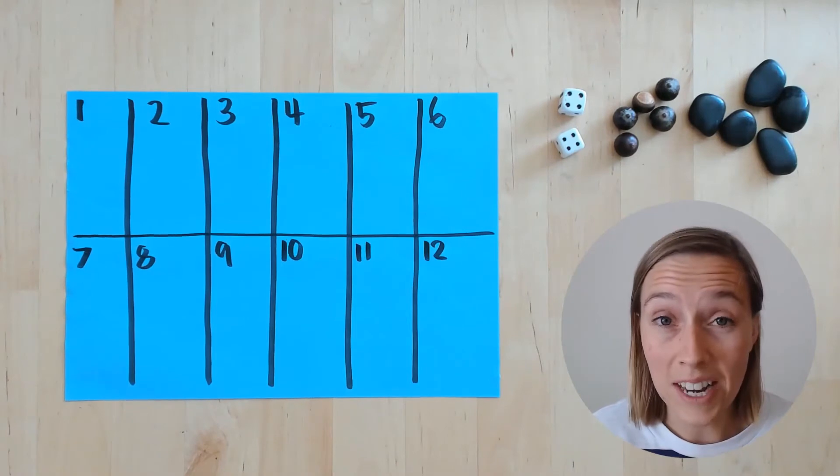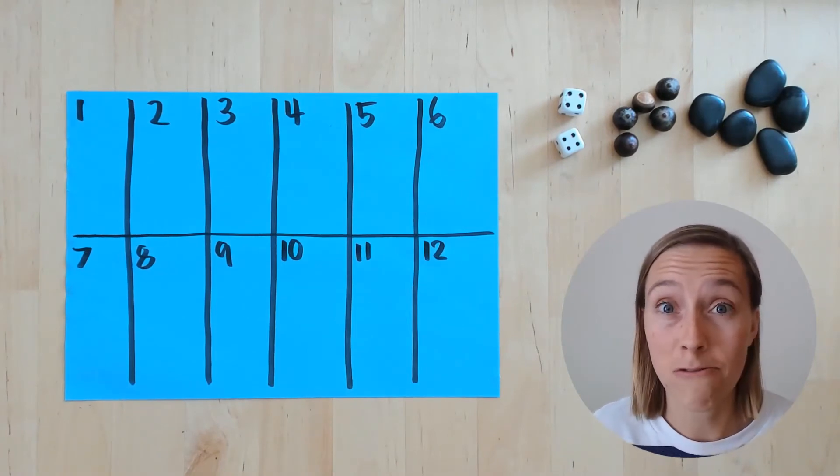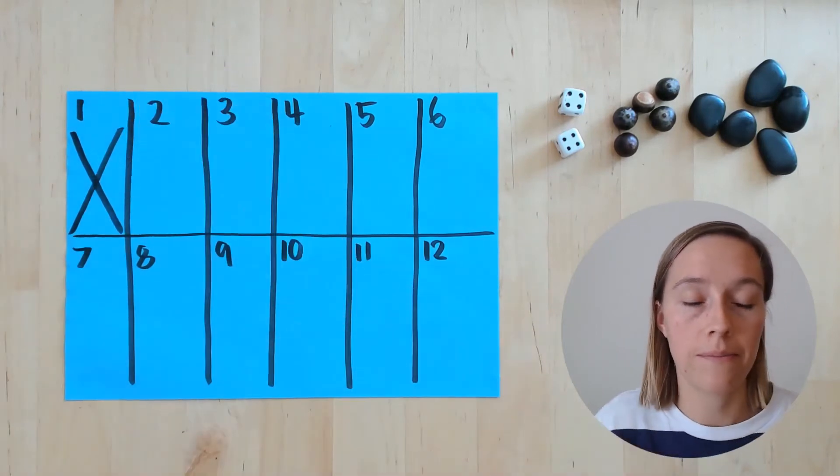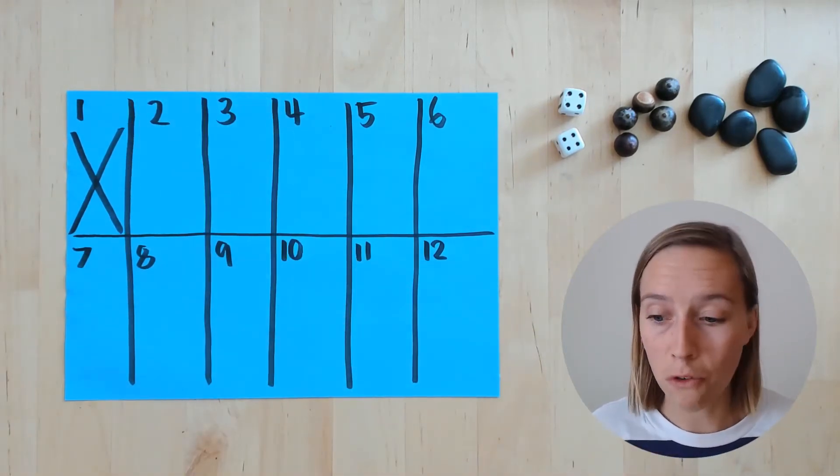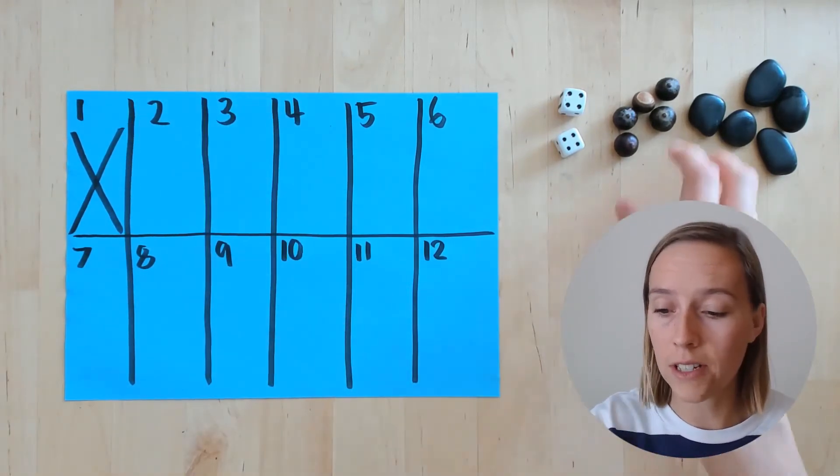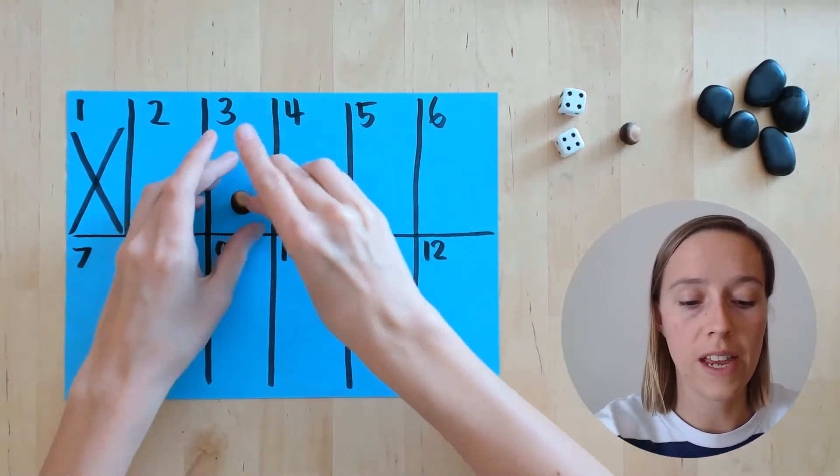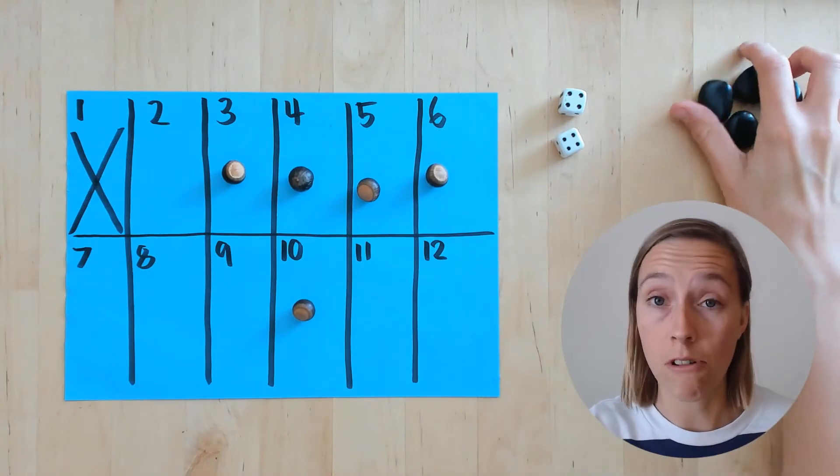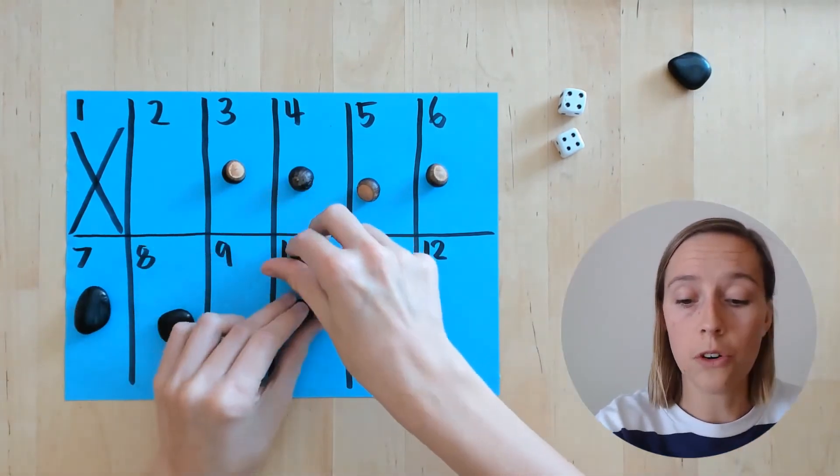Then the last thing we need to do to set up our page is put a big cross on the number one because we can't use that box there. Then, the same as before, the player with the acorn counters is going to put their acorns wherever they like on the board. And the player with the rock counters can put their rocks wherever they like on the board.